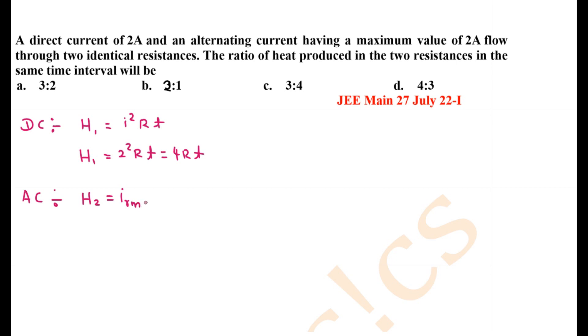...the work of I will be performed by the root mean square current: I_RMS² × R × T. As the peak value is given, we can find I_RMS = I₀/√2 = 2/√2. Squaring this: (2/√2)² × R × T equals 2RT.